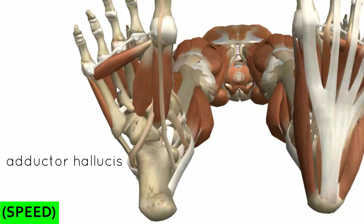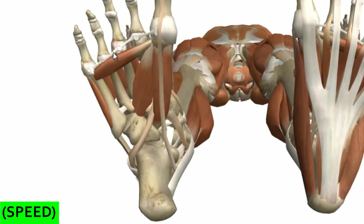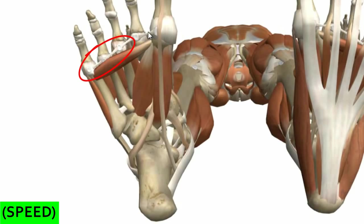Next, we've got the adductor hallucis muscle - same as in the hand, it has a transverse head and an oblique head. The transverse head runs horizontally across the foot, originating on the deep transverse metatarsal ligament and the plantar ligaments of the lateral three toes, then inserting at the base of the proximal phalanx of the great toe.